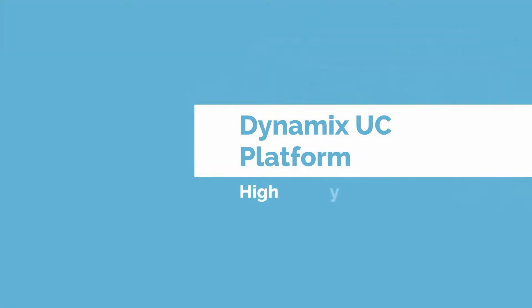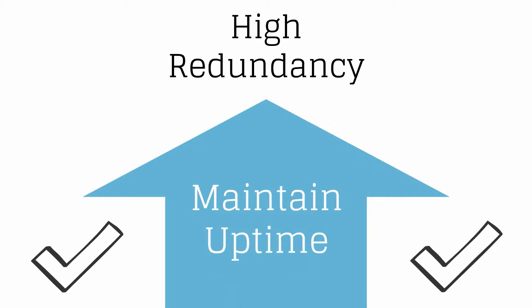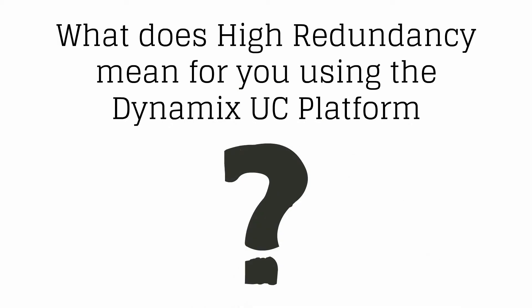Hi, my name is Sandra and today we are going to talk about high redundancy and what this means for you using the Dynamics UC platform. The idea of high redundancy is to maintain uptime. At Dynamics we want to make sure all systems and services keep functioning like they should. What does this mean for you using the Dynamics UC platform?